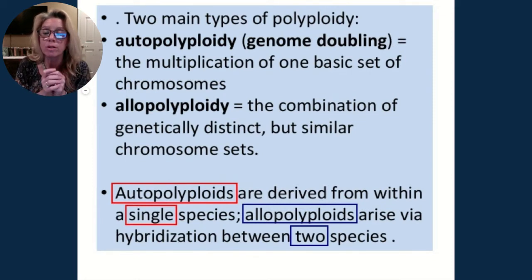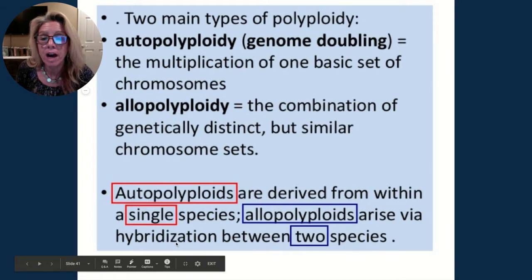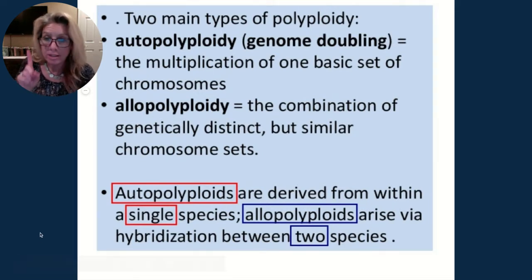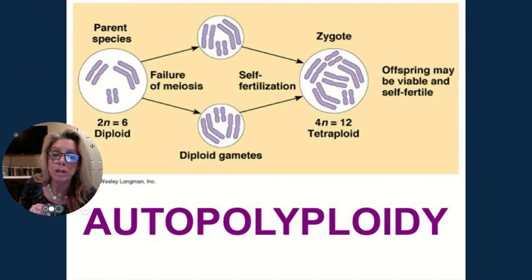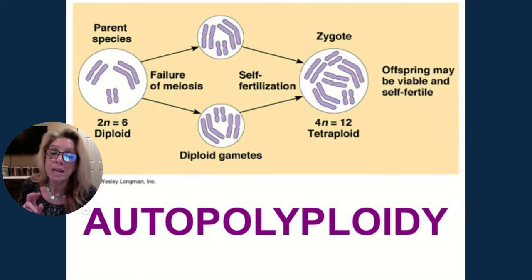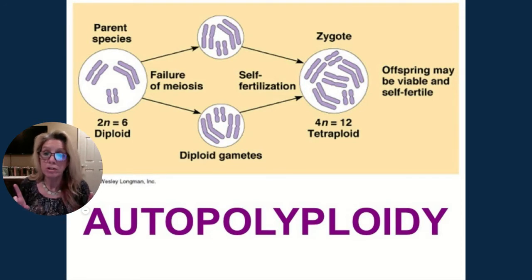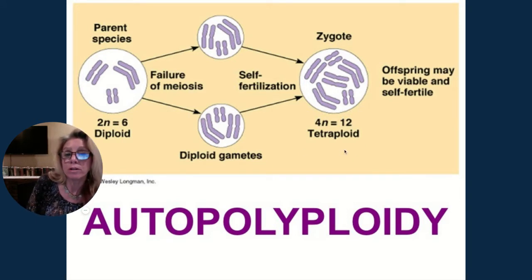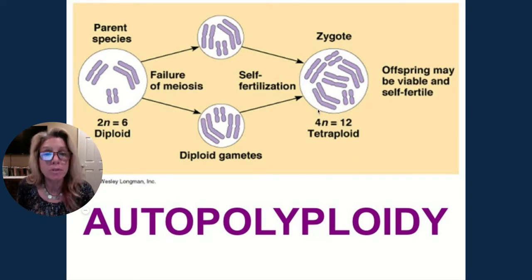Allopolyploidy is when two different species hybridize and then gain an extra set of chromosomes to make homologous pairs and avoid sterility. In autopolyploidy, a diploid organism with six chromosomes — three homologous pairs — undergoes meiosis but produces diploid gametes instead of haploid ones. If it self-fertilizes, you now have 2n + 2n, making a tetraploid organism. Plants can work this way; animals do not.